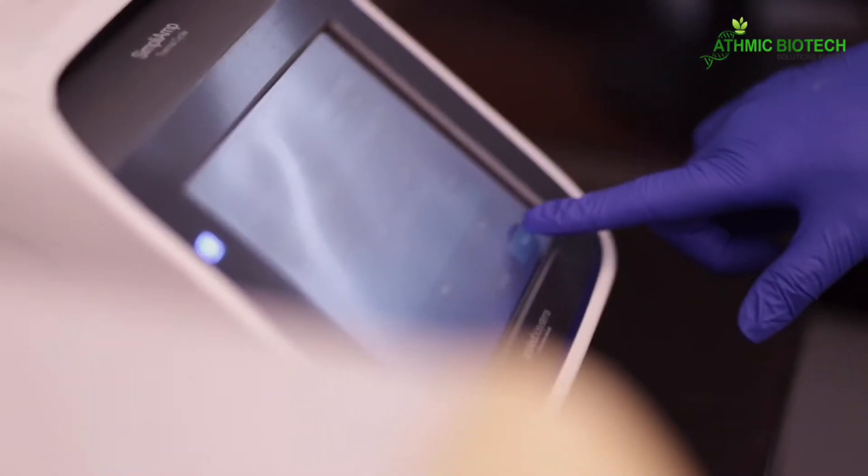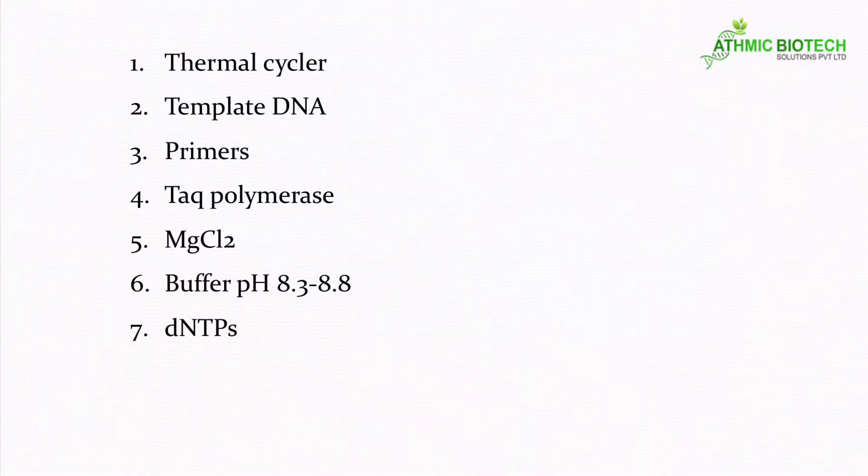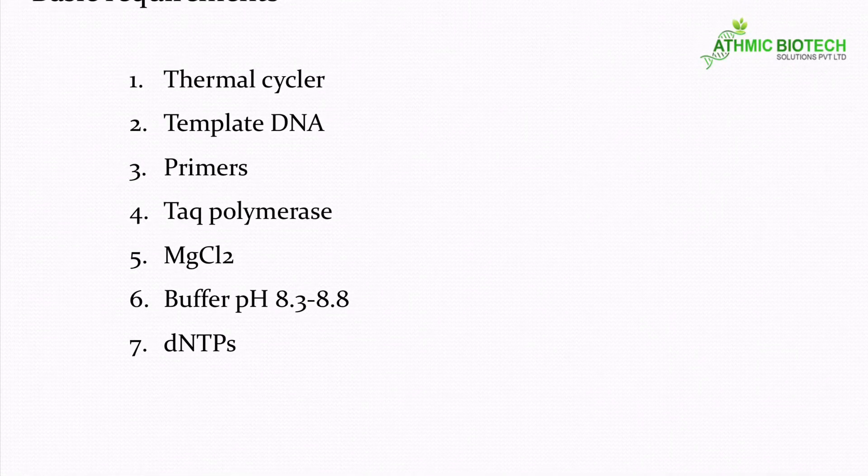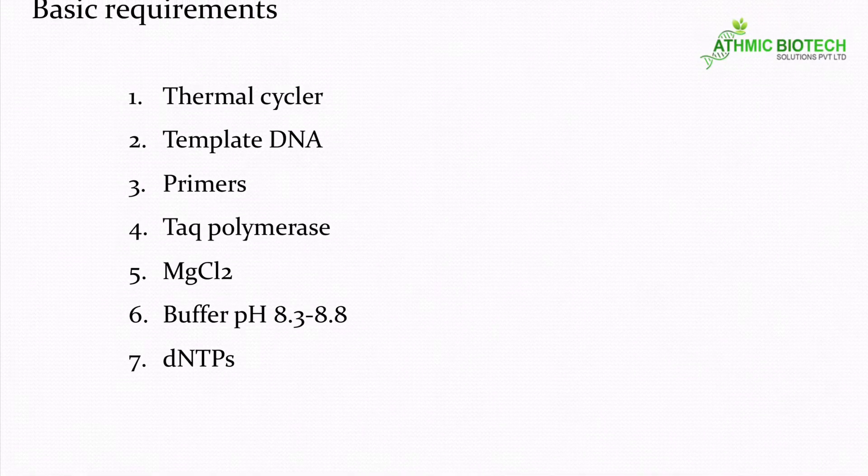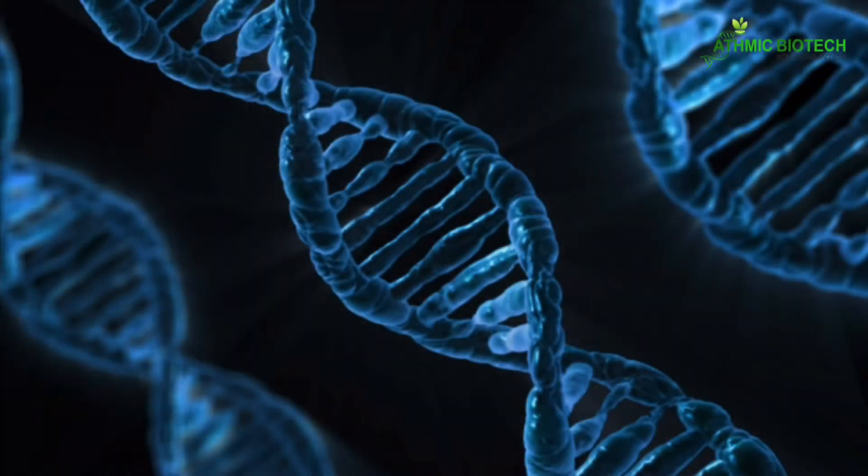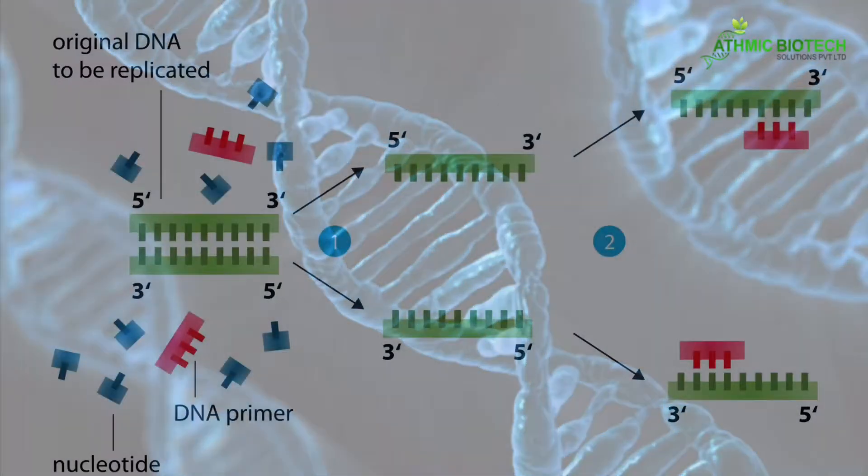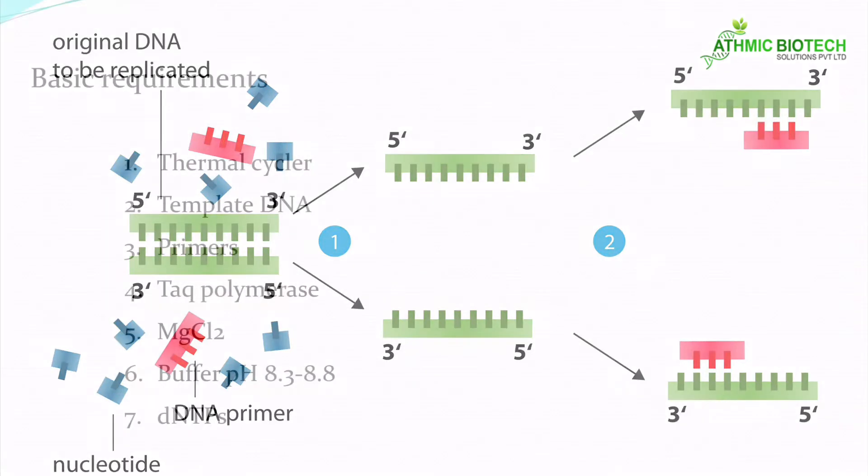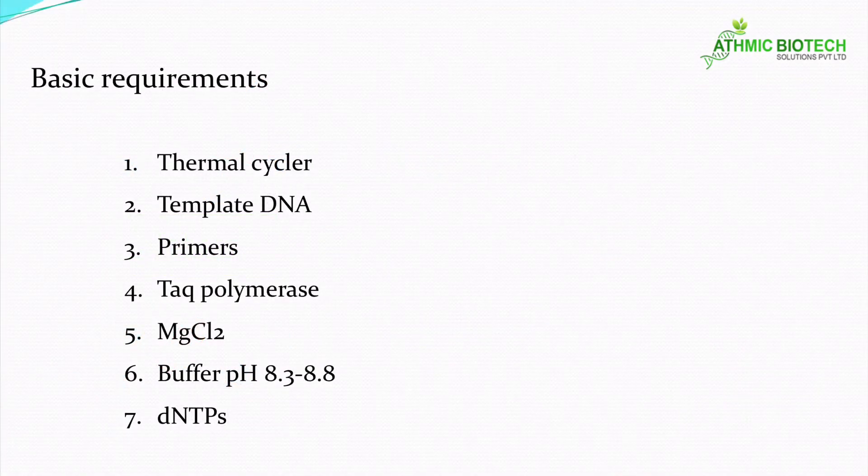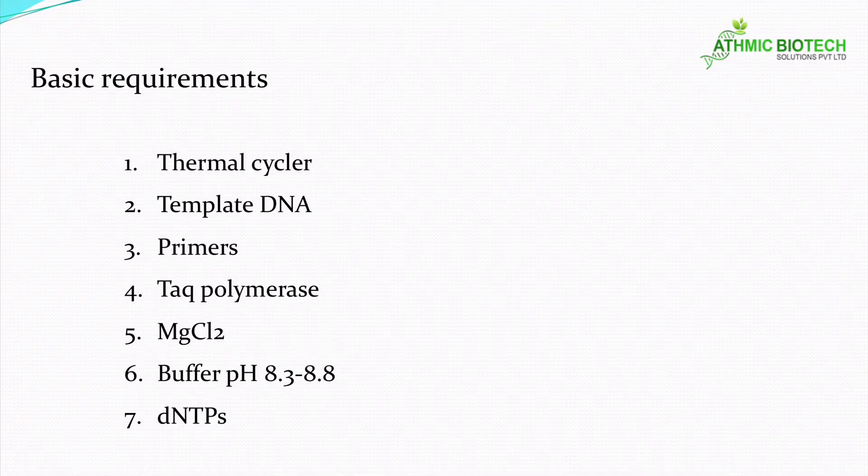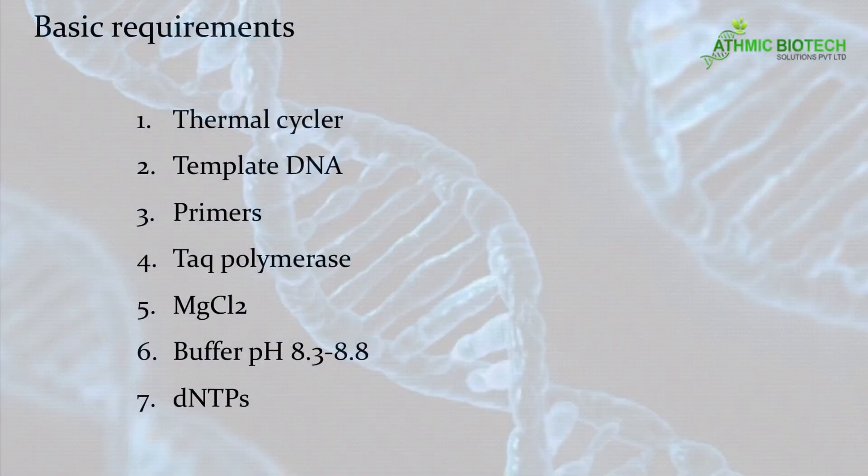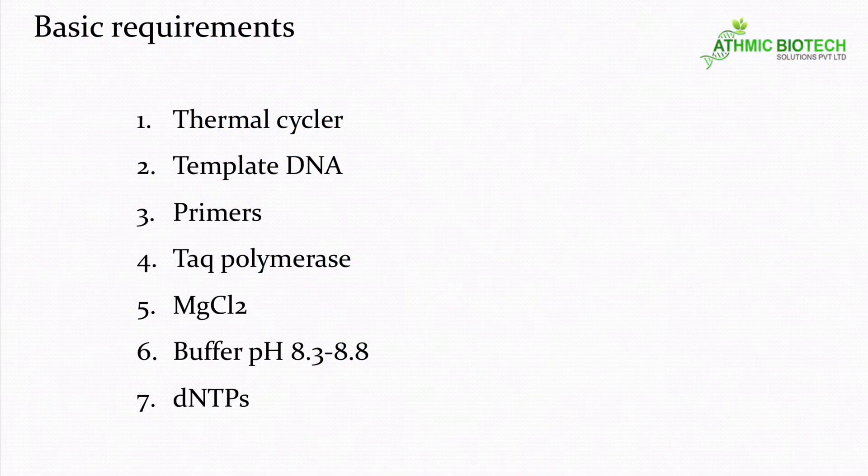This Taq polymerase is taken from the organism Thermus aquaticus. It is a hot spring bacteria, a thermophilic bacteria seen in hot springs. And why we are taking this? Because the enzyme is thermally stable. Mg2+ ion is an essential ion for the activity of Taq polymerase that you have to supply. Another one is the buffer. Buffer pH is 8.3, in between 8.3 to 8.8. That is the optimum pH for doing a PCR reaction.